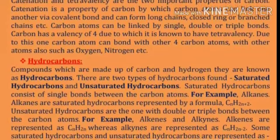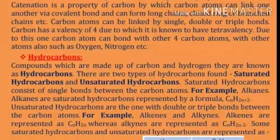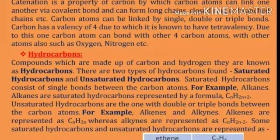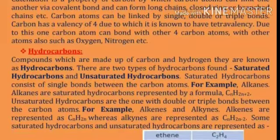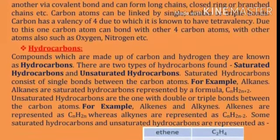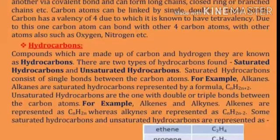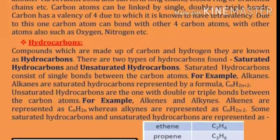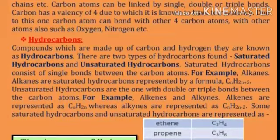Unsaturated hydrocarbons are those with double or triple bonds between the carbon atoms. For example, alkenes and alkynes are types of unsaturated hydrocarbons. Alkenes are represented as CₙH₂ₙ, whereas alkynes are represented as CₙH₂ₙ₋₂.